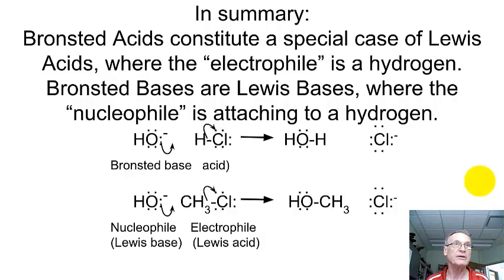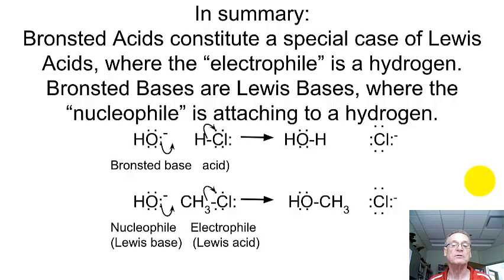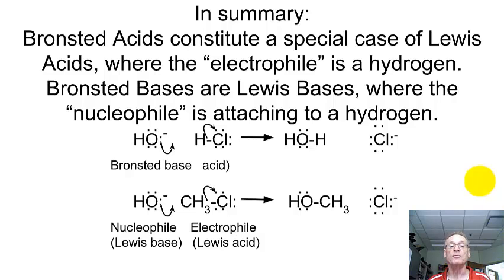In summary, Brønsted-Lowry acids — which are the proton donors, something that wants to give away an H⁺ — really just constitute a special case of Lewis acids, where Lewis acids are things that want to find a pair of electrons on some other molecule and share them. Brønsted-Lowry acids are really just a special case of Lewis acids where the electrophile is a hydrogen trying to share a pair of electrons, instead of a carbon or some other atom. Brønsted bases are really just Lewis bases in almost every way, where the nucleophile attaches to a hydrogen instead of to a carbon or some other atom.